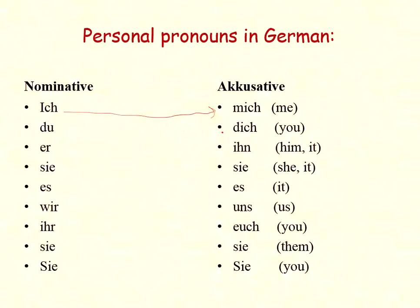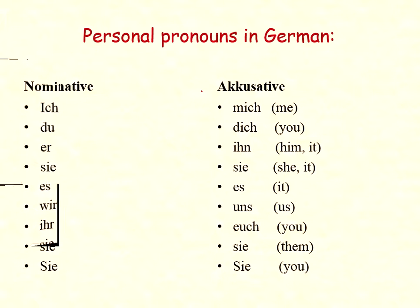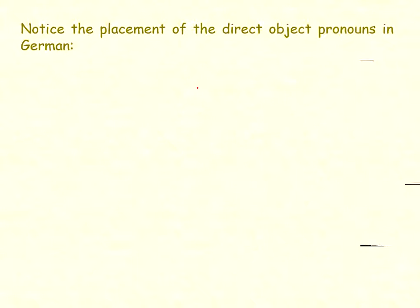The accusative forms are as follows: 'ich' changes to 'mich,' 'du' changes to 'dich,' 'er' changes to 'ihn,' 'sie' to 'sie,' 'es' to 'es,' 'wir' to 'uns,' 'ihr' to 'euch,' and 'sie/Sie' to 'sie/Sie.' This is the change we make when these pronouns are used in object form — that is the accusative.